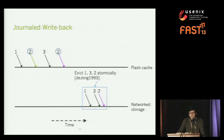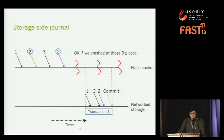We implemented this in journal write-back by using a journal on the network storage. A host starts a transaction, sends a group of writes to the network storage, and finally sends a commit. The network storage in the background checkpoints these transactions to their final position on disk. If we crash in the middle of a transaction, uncommitted transactions are simply discarded.